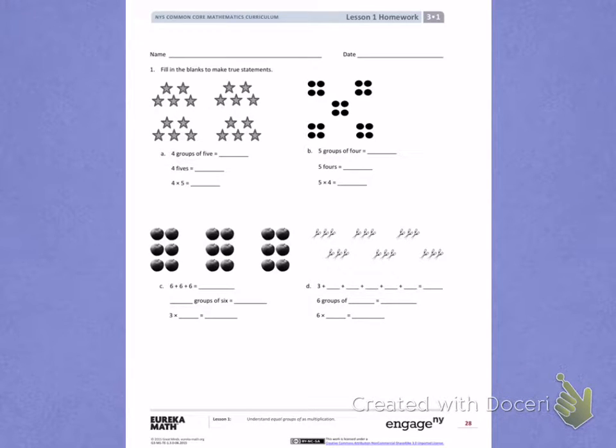Number 1. Fill in the blanks to make true statements. Letter A. Four groups of five. I see that there are stars grouped into groups of five. I can count by fives to help me find the total.